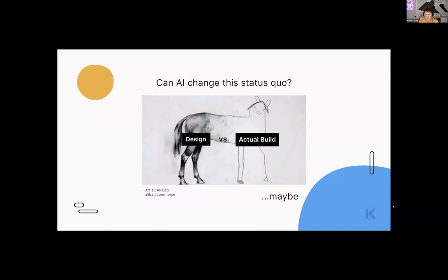There are two pathways to think about for the context where AI operates. One is the context of design tools — should I take Figma and make it React? The other is: what if we make React code manipulable by people who don't understand code? Those are the two competing contexts in AI right now — do we take the image of a thing and make code from it, or take code and make it easier for non-coders to manipulate?